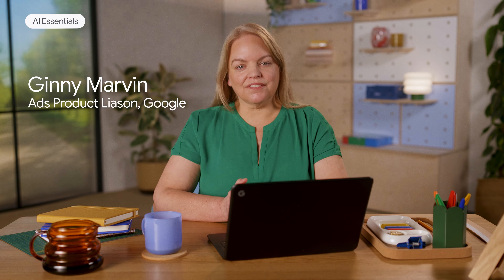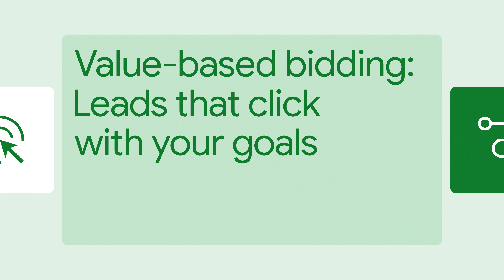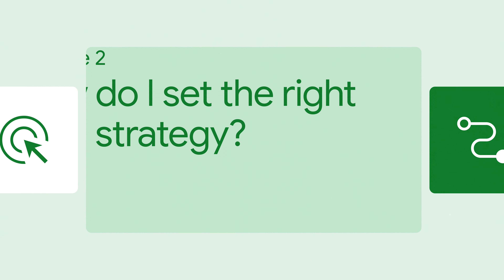In today's chat, we'll look at identifying the right data and assigning goals. This is crucial to ensure that Google's AI is learning from the right inputs. It might sound a bit daunting, but here are three practical steps you can take.